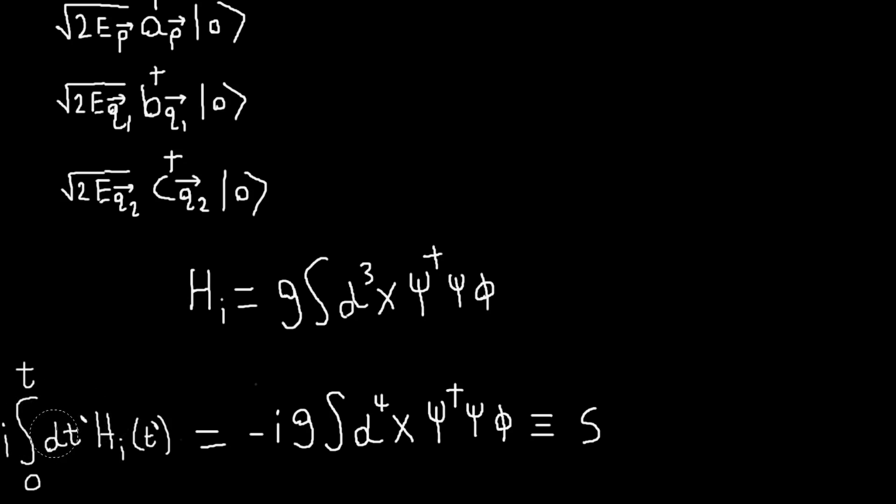And so this is the operator that we're going to use to actually compute things. So, if I write out, so this is my Hi, if I plug that in here, basically all that happens is, I have an integral d3x, and now I have an integral dt prime. And so this will turn into an integral of space-time. And then we also get this minus i, and he calls that S.